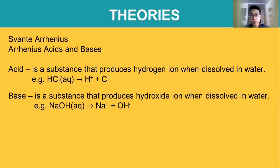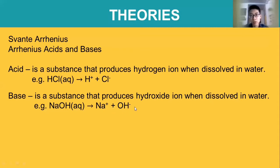Now I will explain about the theories of acid and base. There are three theories. The first one is Svante Arrhenius, known as the Arrhenius theory of acid and bases. According to him, acid is a substance that produces hydrogen ion, or H+ ion, when dissolved in water. For example, hydrochloric acid in aqueous form will become H+ plus Cl-. Meanwhile, base is a substance that produces hydroxide ion when dissolved in water. The example is NaOH, or sodium hydroxide, which produces Na+ and OH-, which is your hydroxide ion.